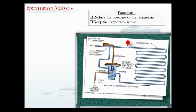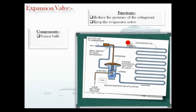The valve needle remains open during the steady state of pressure. The size of the opening, or the position of the needle, is related to the pressure and temperature of the evaporator. There are basically three main parts of the expansion valve that regulate the position of the needle: first is the sensor bulb located at the end of the evaporator coil, which monitors the temperature change of the evaporator; second is the diaphragm, where a change in temperature creates a change in pressure; and third is the needle valve.